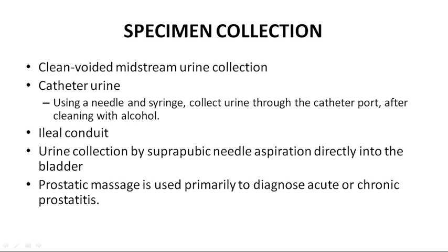Urine samples should be collected for the diagnosis of urinary tract infections. These can be collected either by a clean voided midstream urine collection, or the urine sample can be collected from a catheterized patient using a needle and syringe through a catheter port after cleaning with alcohol. Urine sample can also be collected from an ileal conduit, or by suprapubic needle aspiration directly from the bladder.